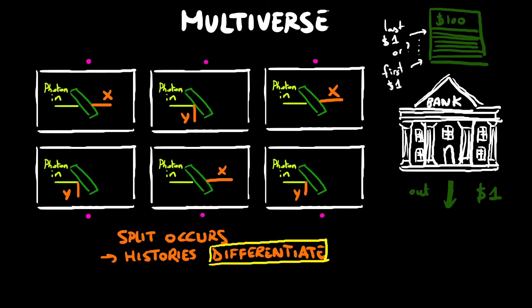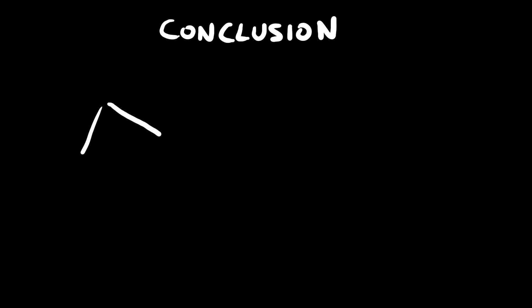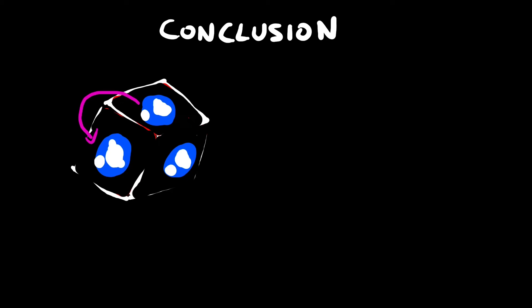Interference happens when histories rejoin, i.e. when parallel universes influence each other. In the previous experiment, we saw that the x and y histories recombine to form the x direction after the last semi-silvered mirror. To conclude, I thought at first that the multiverse theory was just an ingenious way of getting around intrinsic randomness through determinism in fungible universes. But the interference experiment shows that it is much more than that since it allows to take into account interference, which is when different histories rejoin.